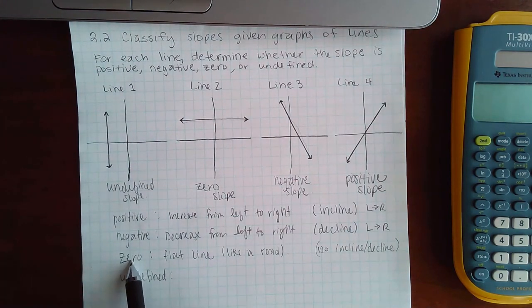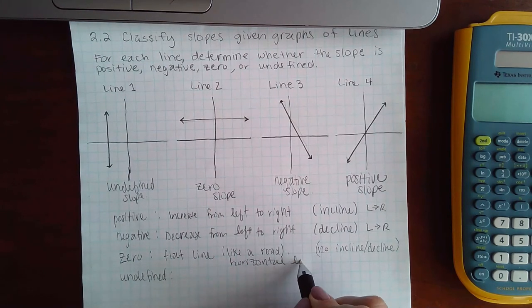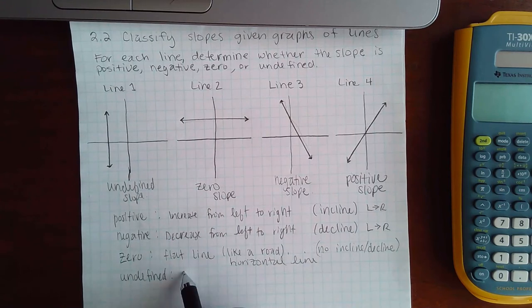Another way you can think of it: the zero slope, since it's a flat line, that's going to be a horizontal line. And undefined slopes are going to be the vertical lines.